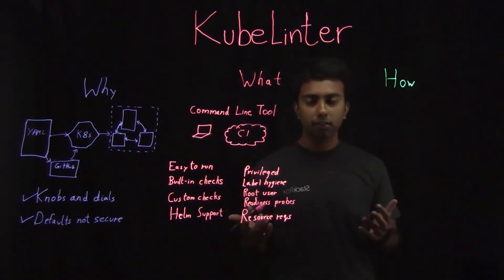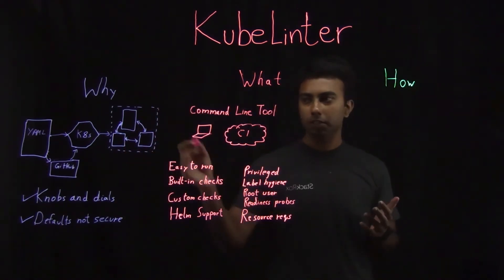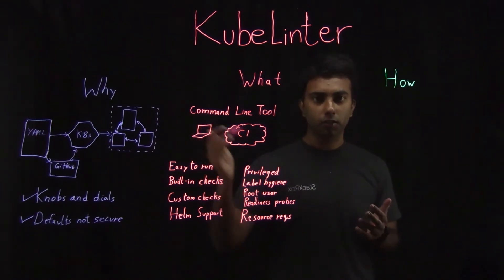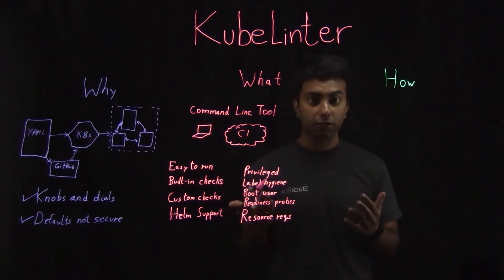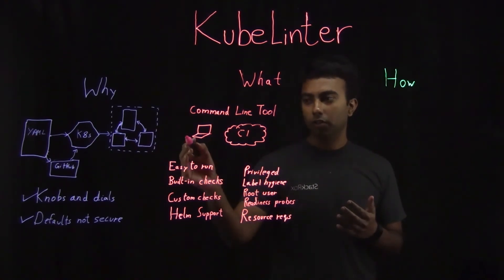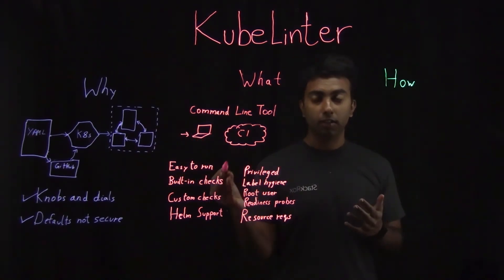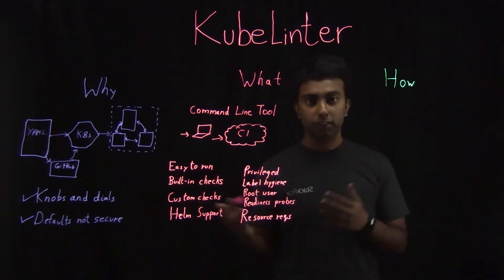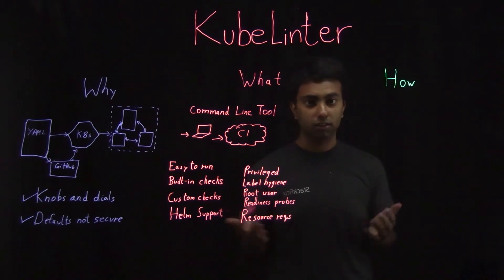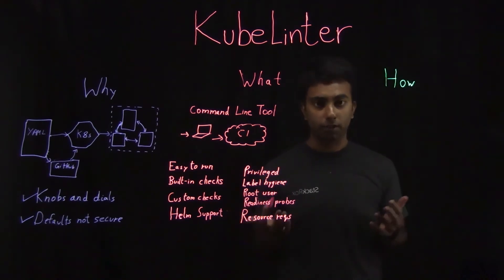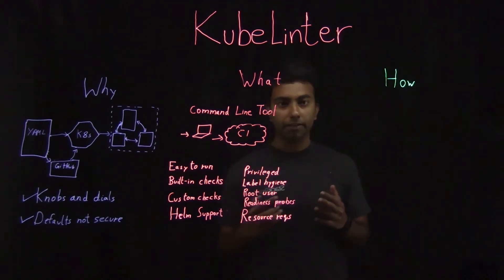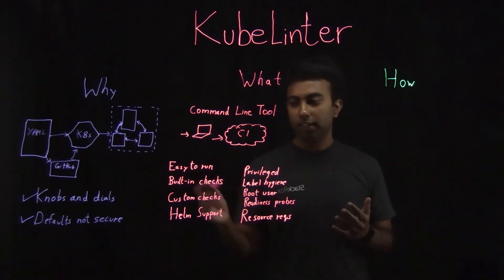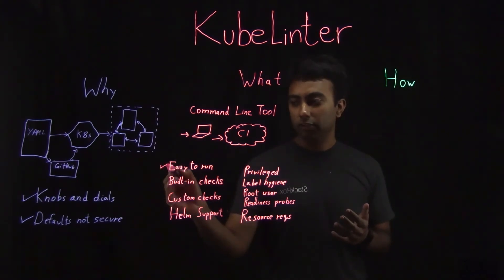So what is KubeLinter? Well, KubeLinter is a simple command line tool, a fully self-contained binary that you can download and install in seconds, that you can run both on developer machines, as well as configure to be used in your CI system of choice, whether that's GitHub Actions, Jenkins, CircleCI, or whatever it is. And KubeLinter is designed so that it's very easy to run.